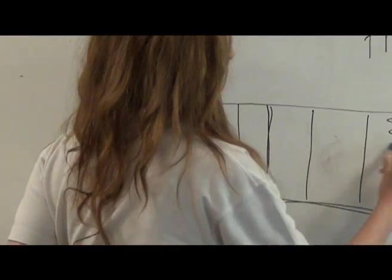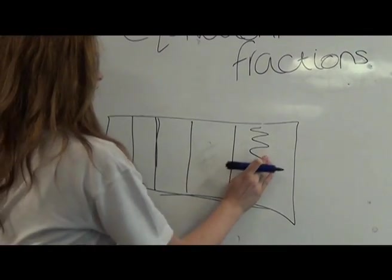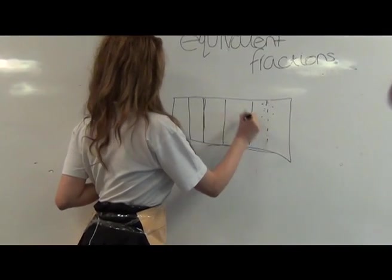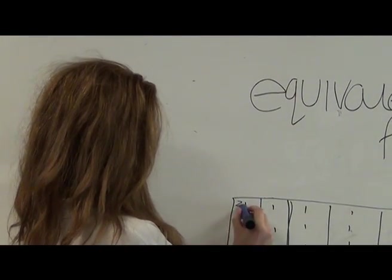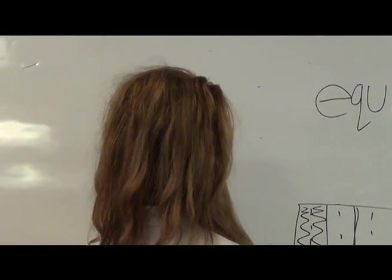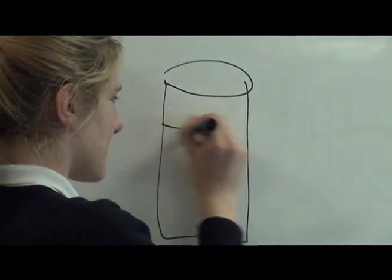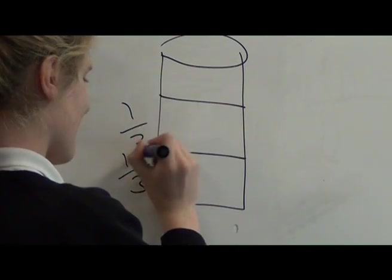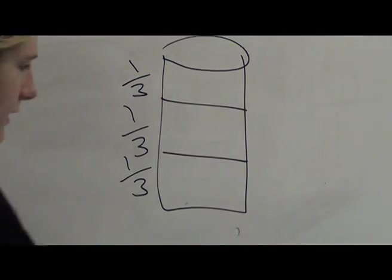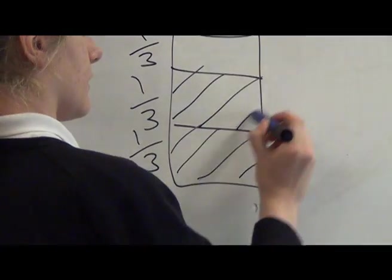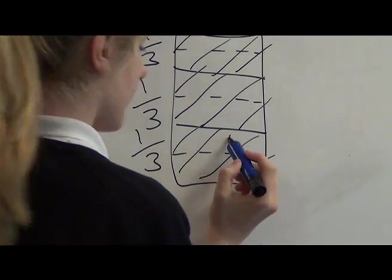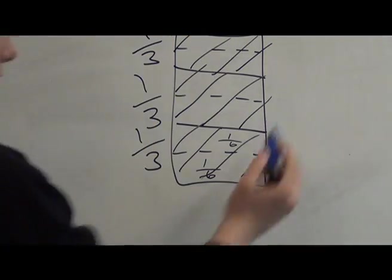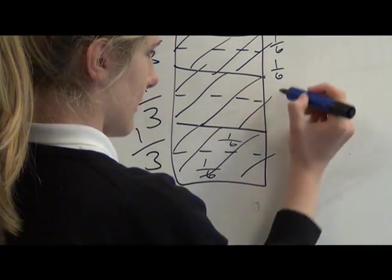This is a whole, so this is 1 fifth. I've got a cylinder split into 3, and each one of these is 1 third. So if I took that, that would be 1 third, that would be 1 third, and that would be 1 third. But if I split it again into another section, this would be into 6. So then we've got 1 third equaling 2 sixths.